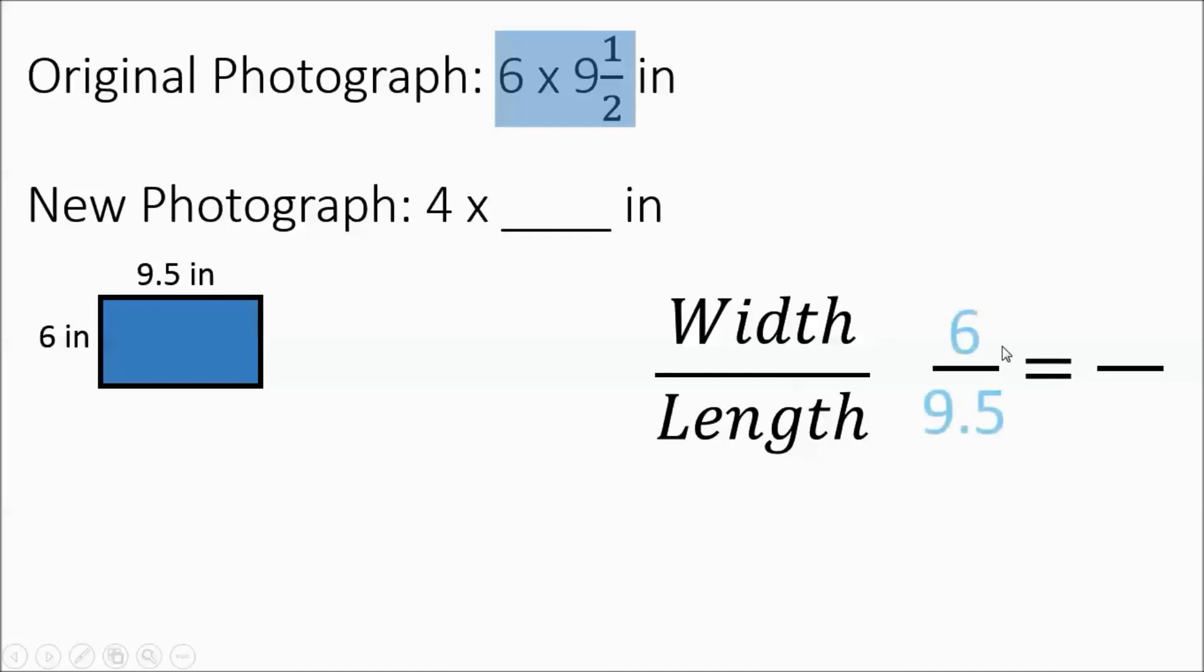We're dealing with 6 to 9 and a half. 9.5 is 9 and a half. You could have done length to width, and then you'd have this one flipped over as an improper fraction. Doesn't matter, as long as you keep it consistent. Now 6 corresponded with 4, so when we do our new picture, 6 corresponds with 4. And also 6 will be across from 4 when we set it up.